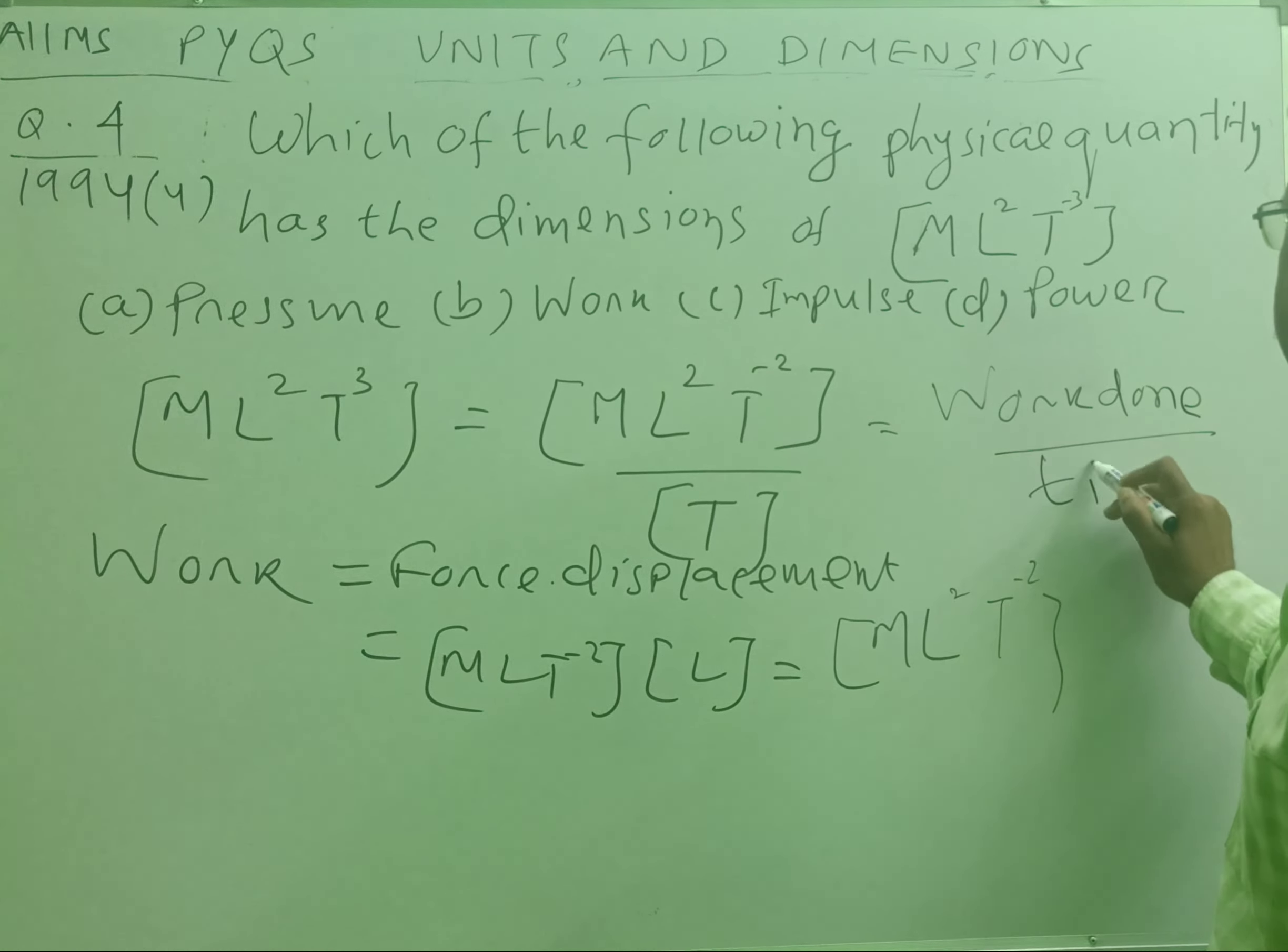Divided by time. What is work done divided by time? Students, this is the rate of doing work, and nothing but power. Because of this, we will write option D. That is correct.